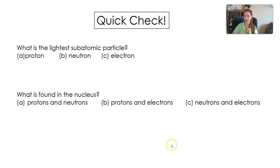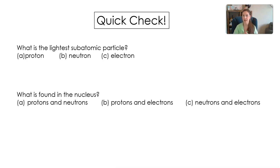Let's do a quick check. The lightest subatomic particle is the electron — it has such little mass that we don't even count it when talking about mass. The two things found in the nucleus are protons and neutrons, and electrons are on those rings outside the nucleus.